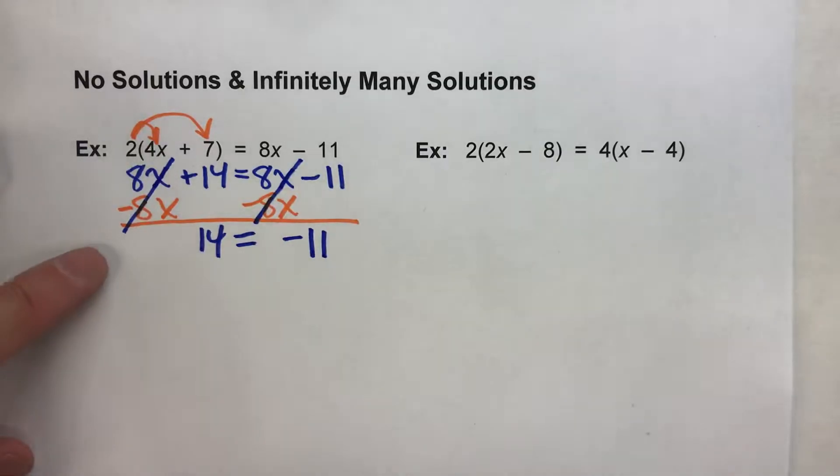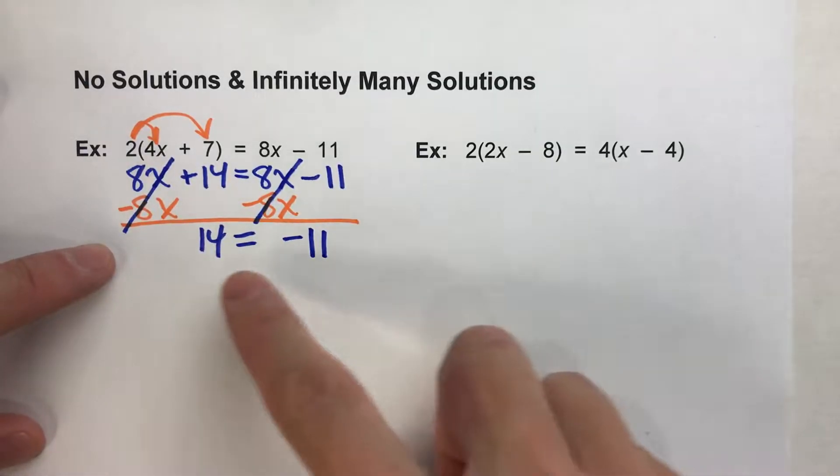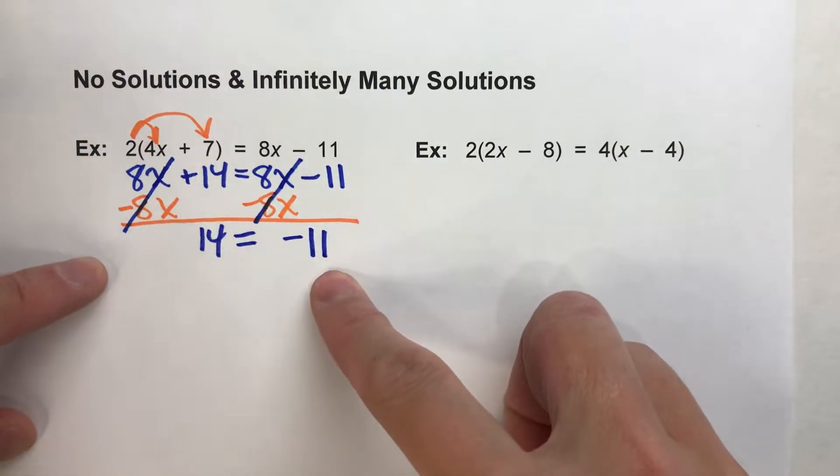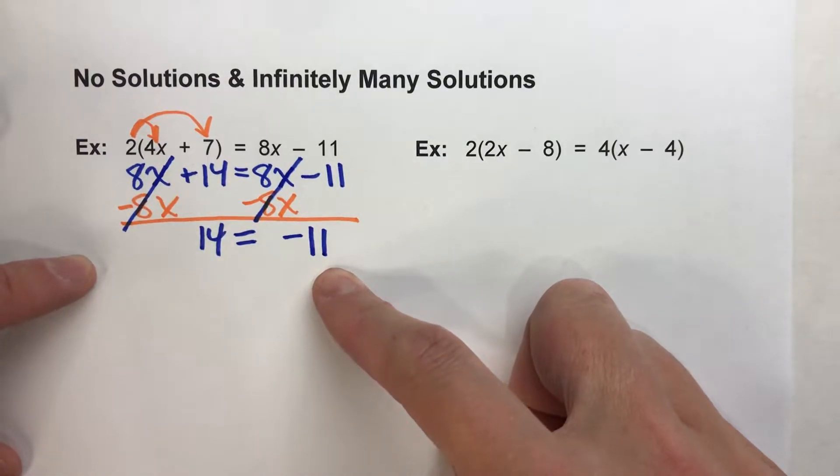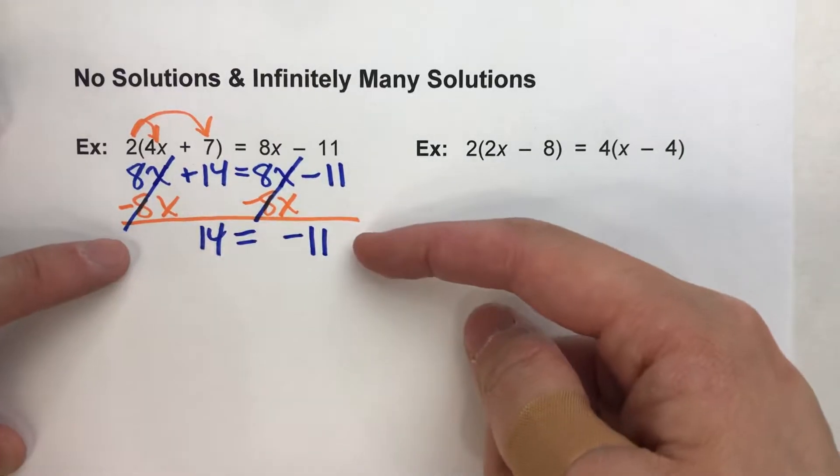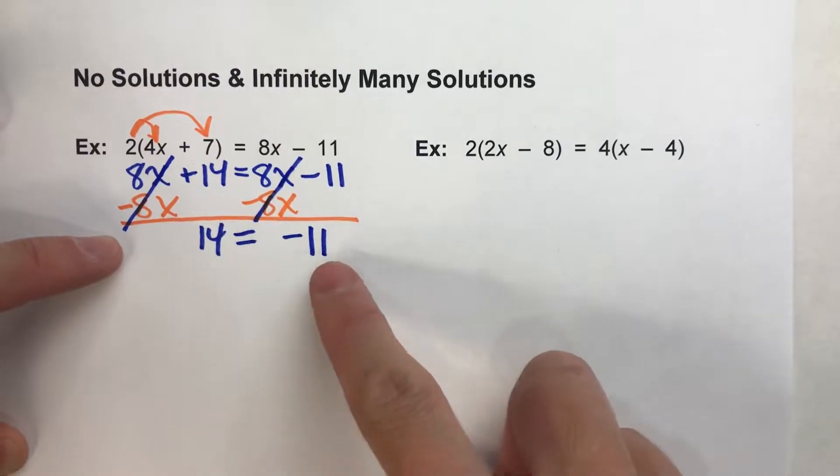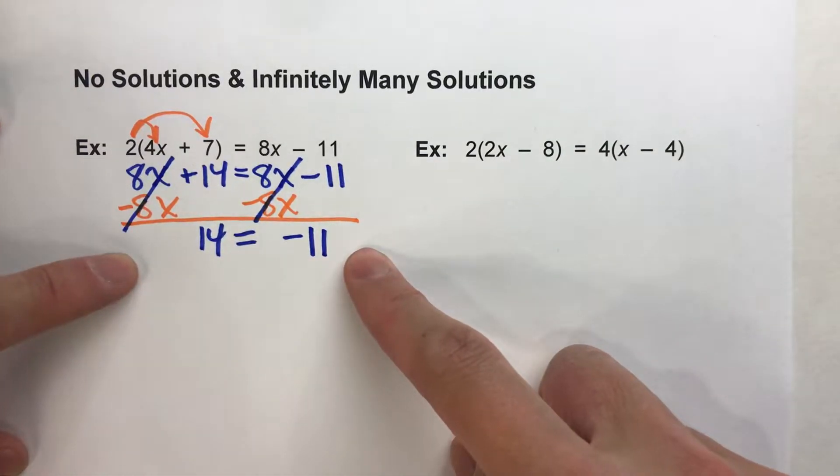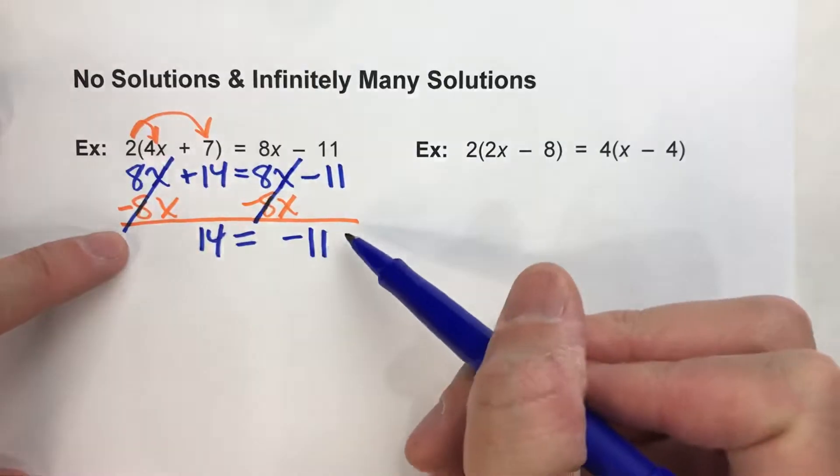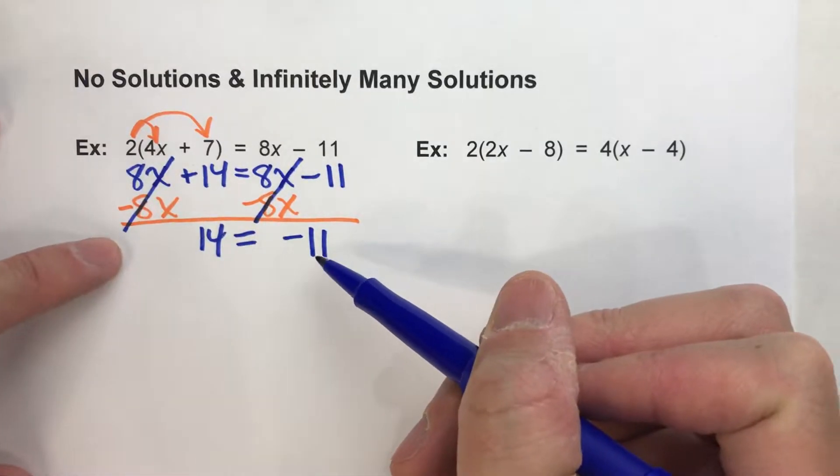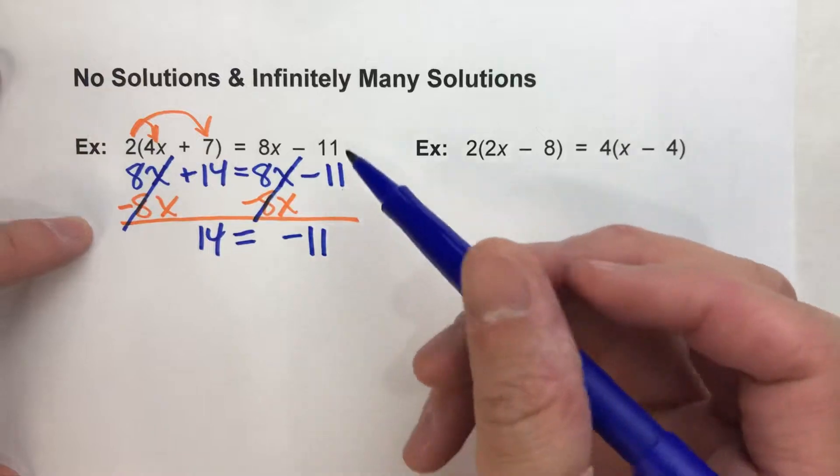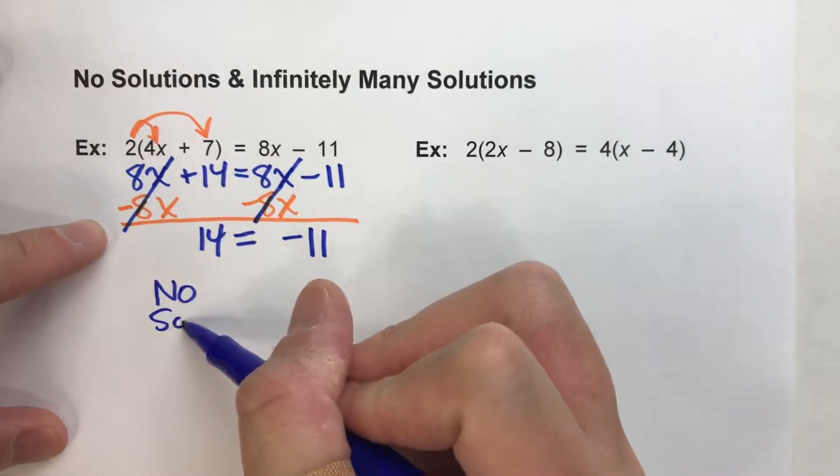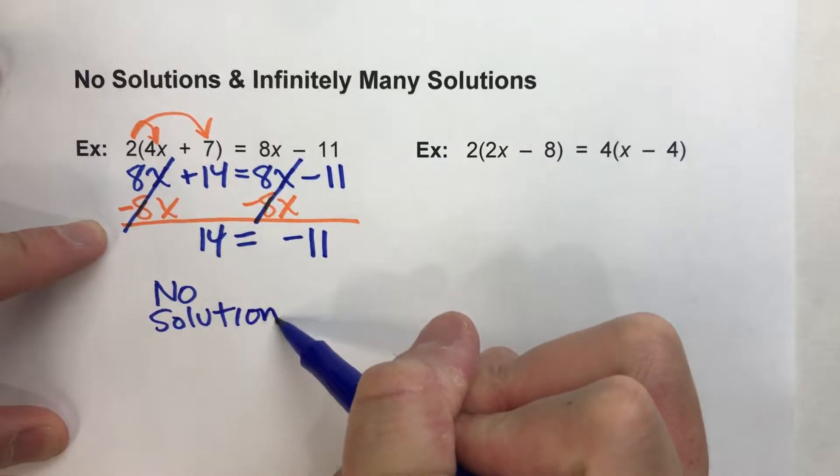And now we've got an interesting situation. Notice, we have no x's in our equation. We have 14 equals negative 11. But if you think about that, that's not possible. 14 can't possibly equal negative 11. 14 never will equal negative 11. So we end up with a statement that is not true. It's contradictory.